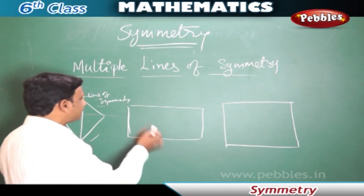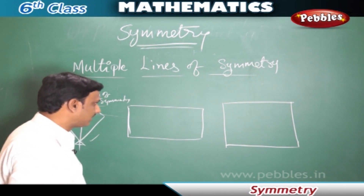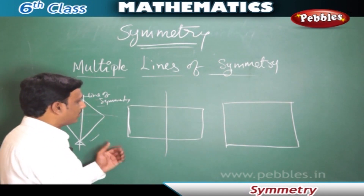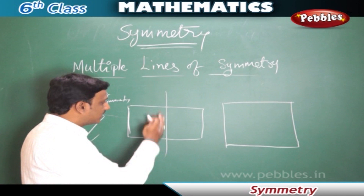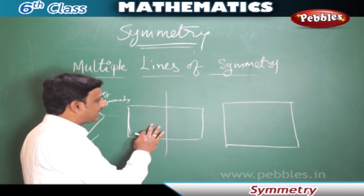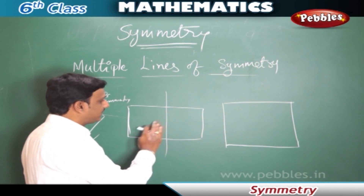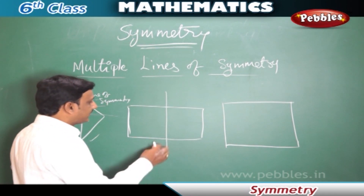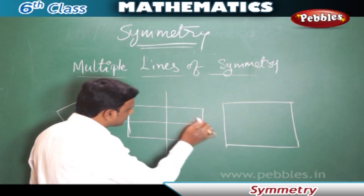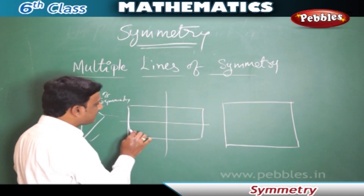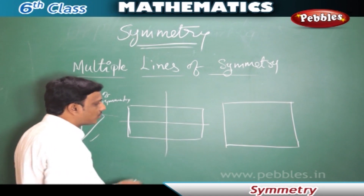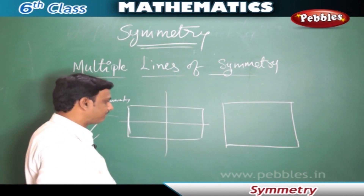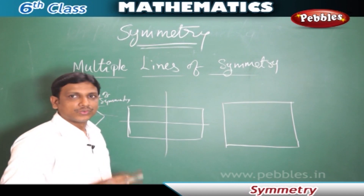But if we look at a rectangle — we can draw a vertical line or fold this figure vertically, and we get two parts which are equally identical and coinciding with each other. Even if we fold this rectangle horizontally, we also find two identical parts. That means a rectangular shape can have two lines of symmetry.